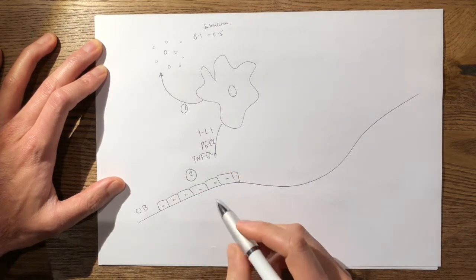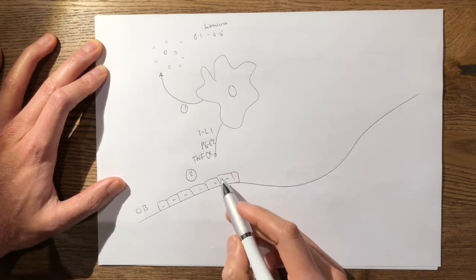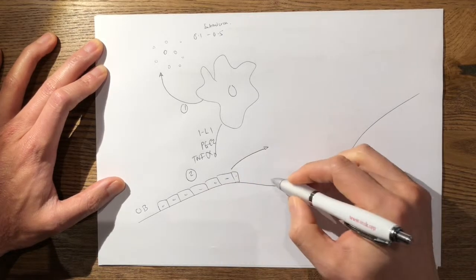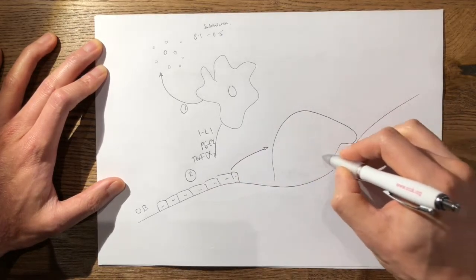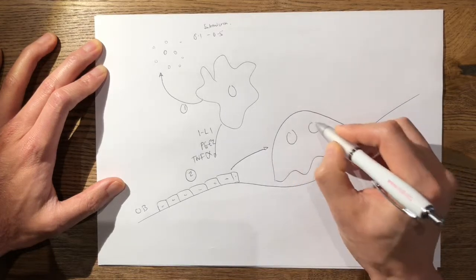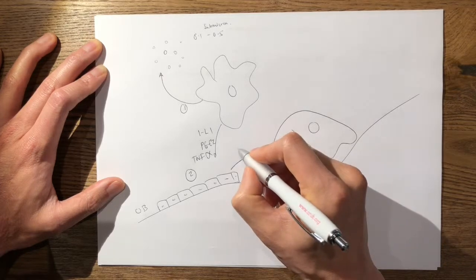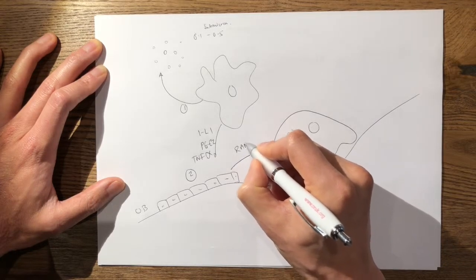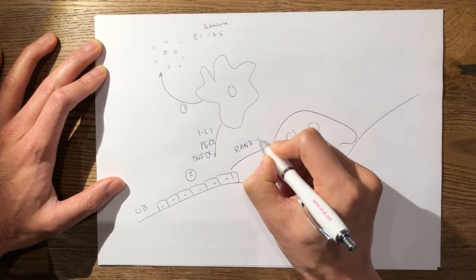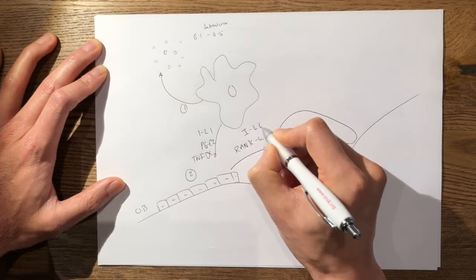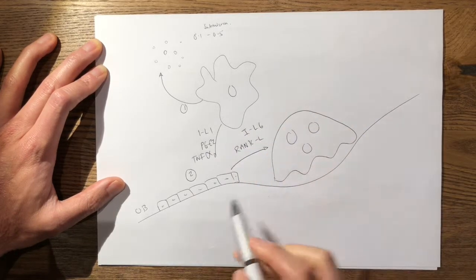This has the effect of then directly stimulating your osteoclasts—which is your multi-nucleated giant cell—via the RANK-RANKL pathway, and also through direct expression of IL-6.